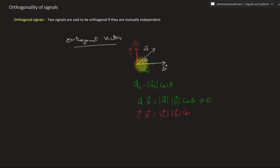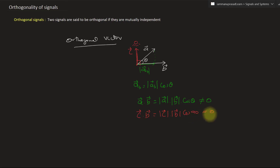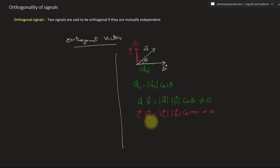This is the angle of 90 degrees, so cos 90 is equal to 0. Therefore the dot product equals 0, and vector C and vector B are orthogonal vectors. In vector analysis, if the dot product result is 0, we call those two vectors orthogonal.